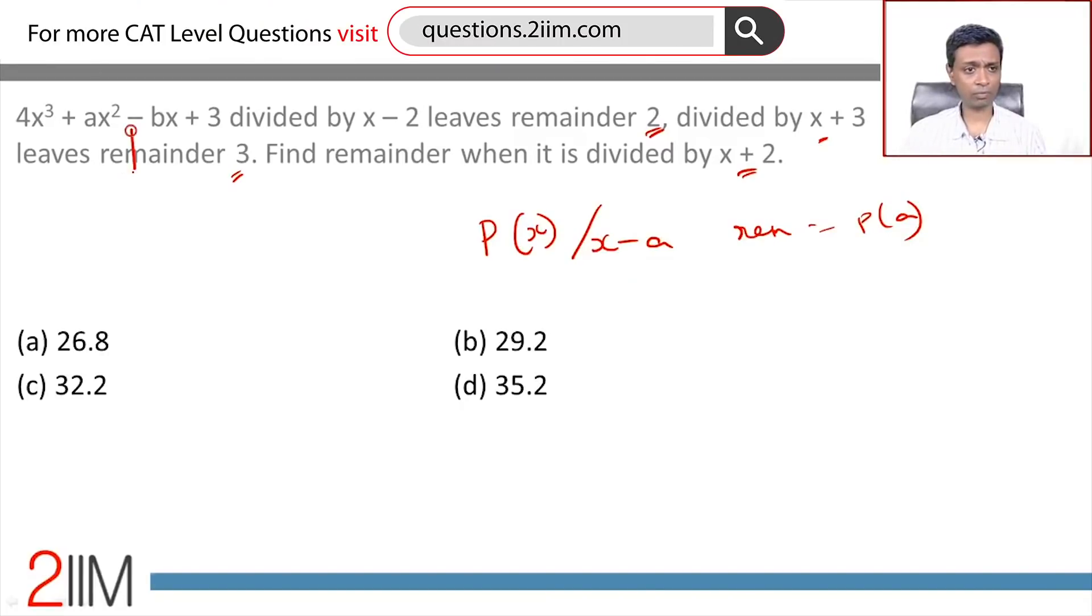If we call this as polynomial p(x), we are being told that p(2) is 2, p(-3) is 3, and we need to find p(-2).